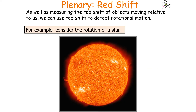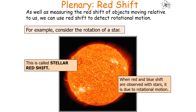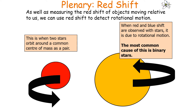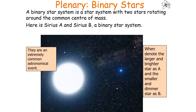As well as measuring redshift of objects moving relative to us, we can use redshift to detect rotational motion — for example, the rotation of a star, which we call stellar redshift. The most common cause of observed red and blueshift in stars is binary stars, where two stars orbit around a common centre of mass as a pair. A binary star system has two stars rotating around a common centre of mass, such as Sirius A and Sirius B. The larger and brighter star is denoted A, and the smaller, dimmer star is B.